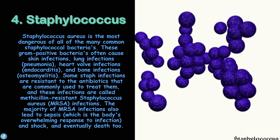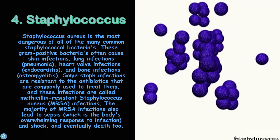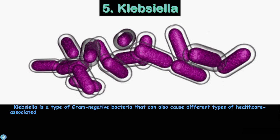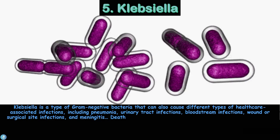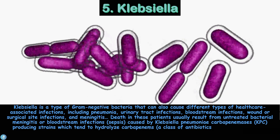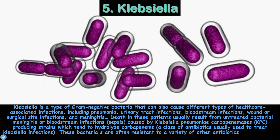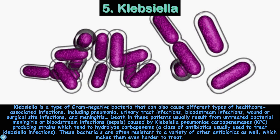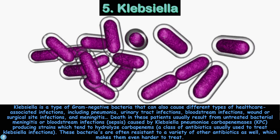The majority of MRSA infections also lead to sepsis, the body's overwhelming response to infection, followed by shock and eventually death. Number five is Klebsiella, a type of gram-negative bacteria that can cause healthcare-associated infections including pneumonia, urinary tract infections, bloodstream infections, wound or surgical site infections, and meningitis. Death usually results from untreated bacterial meningitis or sepsis caused by KPC-producing strains, which hydrolyze carbapenems — the class of antibiotics typically used to treat these infections. These bacteria are often resistant to a variety of other antibiotics as well, making them even harder to treat and more deadly.